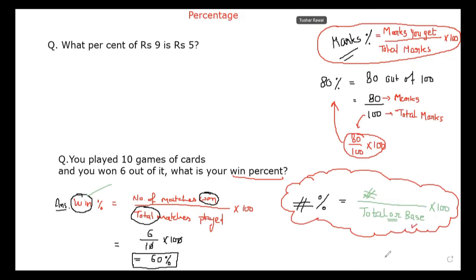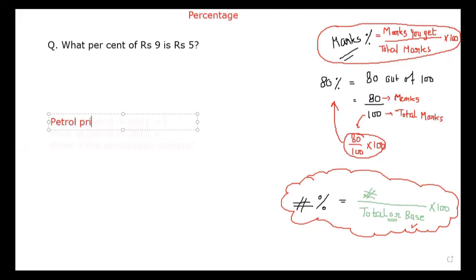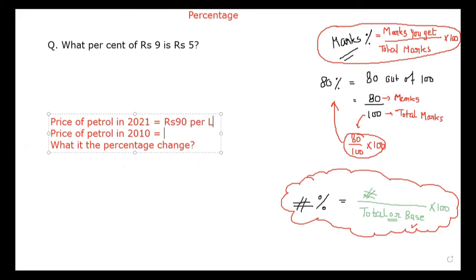Good. Now I will explain another question with the help of base. Our next question — do you know what is the petrol price right now? No sir. Okay, the year 2021 is approximately ₹90 per liter. Just to make calculations easy and understand the concept, the price of petrol in the year 2010 is approximately ₹51 — so let's take ₹50 per liter. What is the percentage change? The word 'change' is very important.